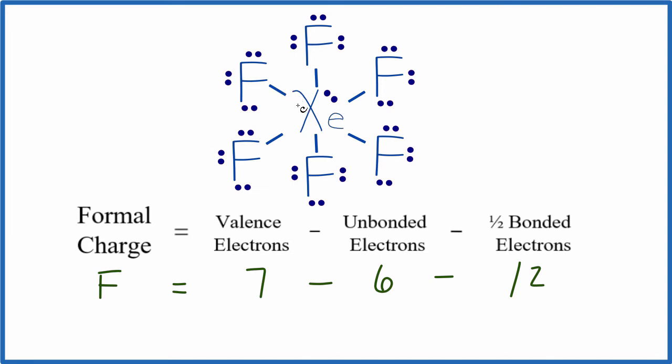So this is the chemical bond that holds the fluorine and the xenon together, and it represents a pair of valence electrons. So we have 2 valence electrons here, and then 7 minus 6 is 1, 1 minus 1 is 0.